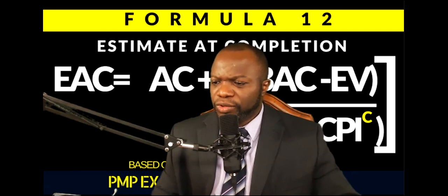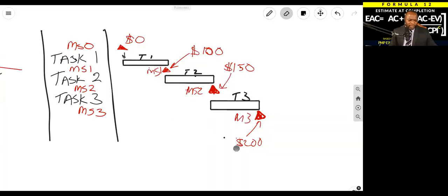You do recall this. This was the example I gave you. Now, using milestones, just milestones, which we called milestone weights, we weighed this at $100, $150, $200.